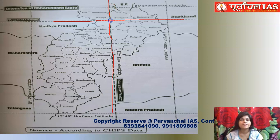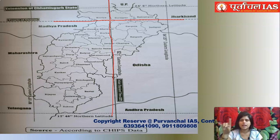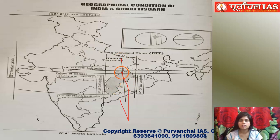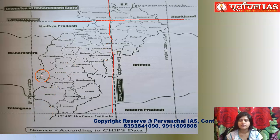The Tropic of Cancer passes through the three northernmost districts of Chhattisgarh: Korea, Surajpur, and Balrampur. The Indian Standard Time meridian crosses almost seven districts. There is an intersection point of both these lines, which is present in Korea district. This has been asked in exams many times — the intersection point of IST and the Tropic of Cancer is Korea district, and Chhattisgarh is the only state in India where this intersection takes place.